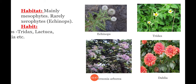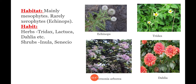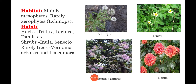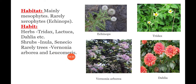Coming to Habit: Herbs, Shrubs, and Trees are present in this family. Examples of herbs are Tridax procumbens, Lactuca sativa, and Dahlia pinnata. For Shrubs, Inula and Senecio are examples. Rarely, Trees are present in this family; they are Vernonia arborea and Leucomeris.